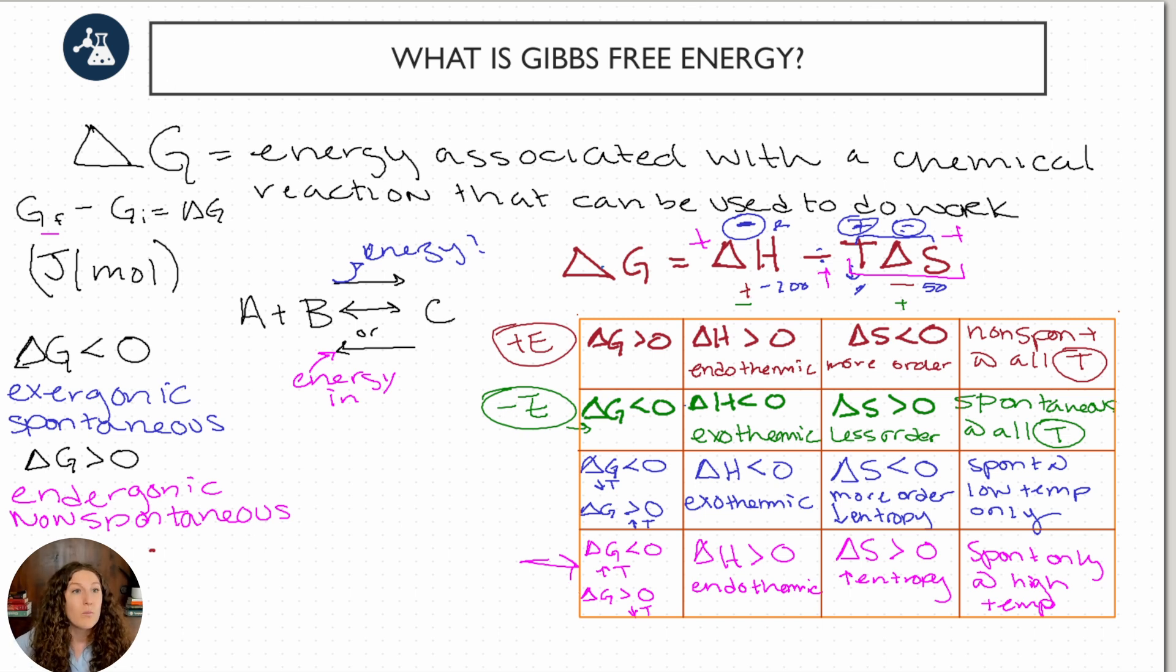Now one final thing here, what happens if delta G is equal or really close to zero? Well, that just means that we are at equilibrium. That means here that we are perfectly balanced and we're not driving forward or moving backwards, and we're sitting there at an equal amount of reactants and products in this nice dynamic equilibrium or steady state conditions.